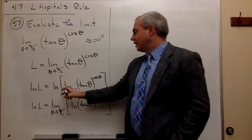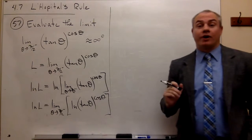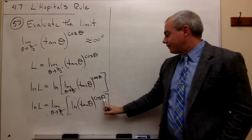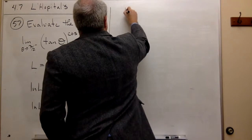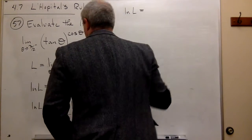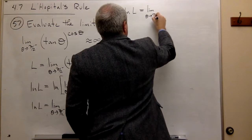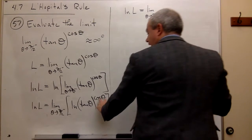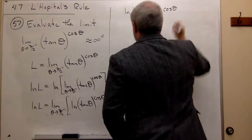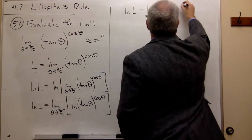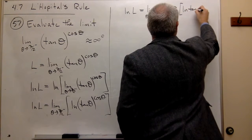Since ln is a continuous function, I can flip what I do first — I can move the limit outside of the natural log. So I can rewrite: ln of L is equal to the limit as theta goes to pi over 2 from the left of ln of tan theta raised to the cosine of theta. Now I can use the power rule for natural log to pull the cosine of theta out in front.